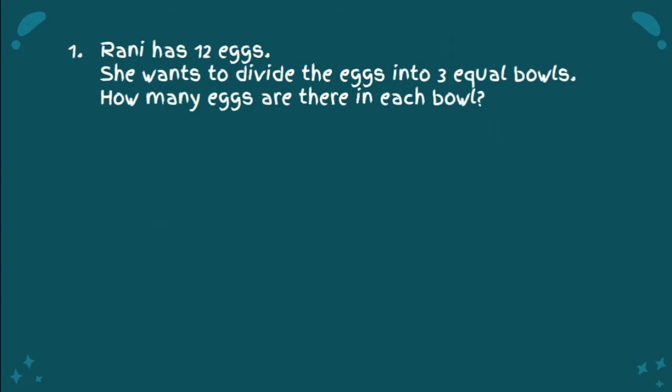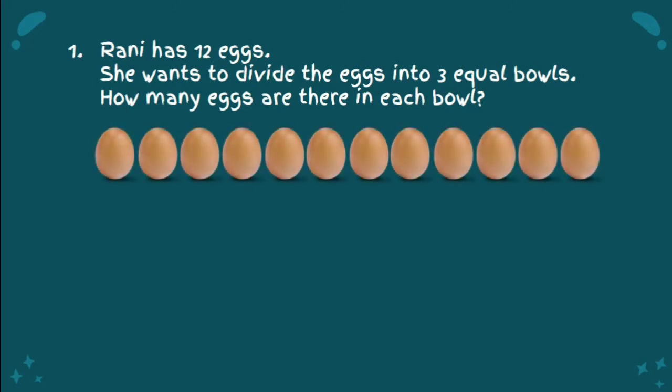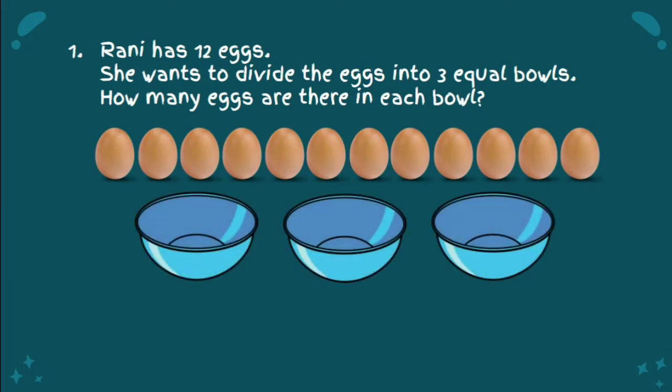Annie has 12 eggs. She wants to divide the eggs into 3 equal bowls. How many eggs are there in each bowl? Here, Annie has 12 eggs and she wants to divide the eggs into 3 equal bowls. Making division sentences is very easy. You just need to divide 12 by 3, like this.